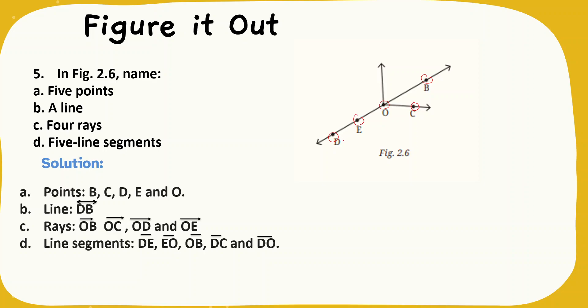Line segments are DE because it has a fixed length. Next, EO it has a fixed length. Next, OB it has a fixed length. If you join DC, this is also a line segment. Next, DO is also a line segment example.